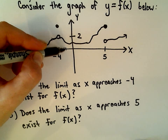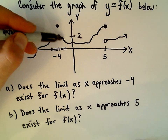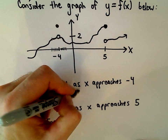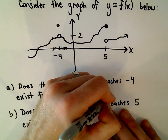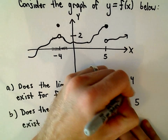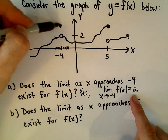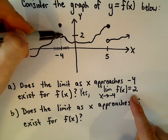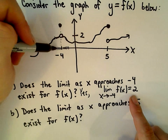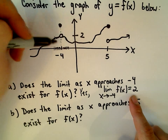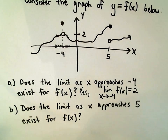Likewise, as I come from the right and take numbers a little bit bigger than negative 4, if I think about what's happening to the y values on the graph, those are getting closer and closer to 2. So yes, the limit as x approaches negative 4 of our function equals positive 2. Notice the actual y value at negative 4 is something totally different, but it doesn't matter what actually happens at that point. We just think: as you get close to negative 4 on the left and on the right, are the y values getting close to some specific number? Yes, and that number is 2.